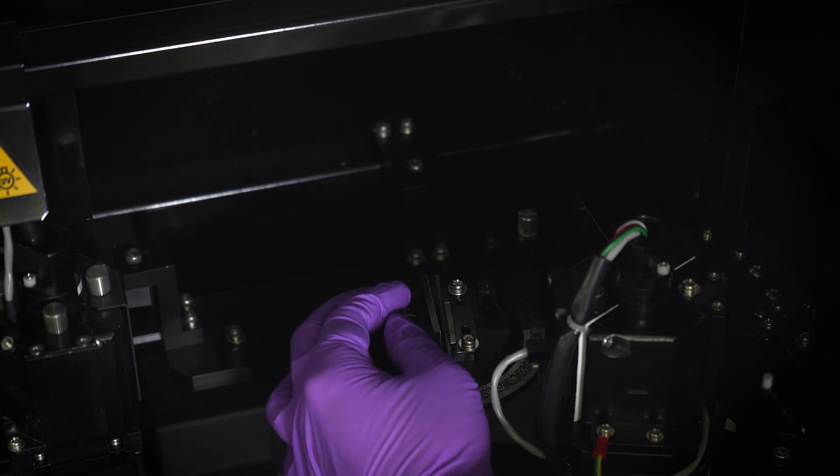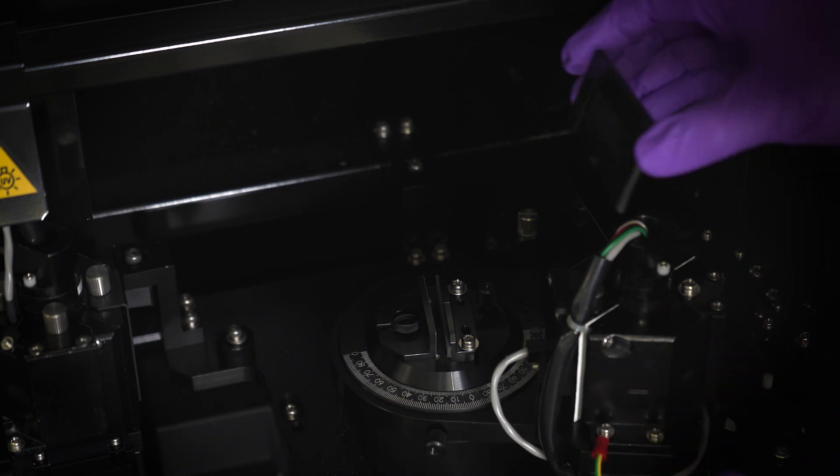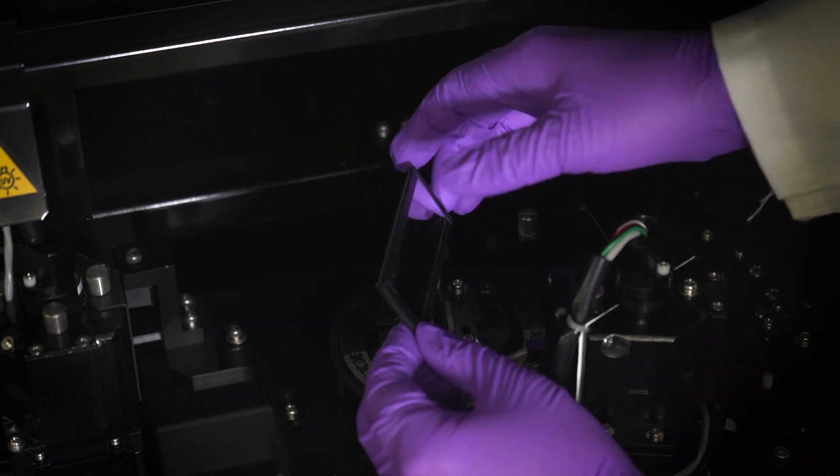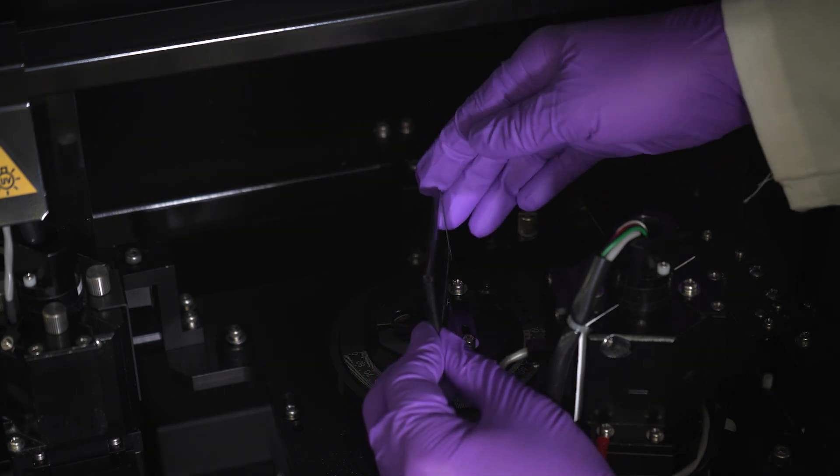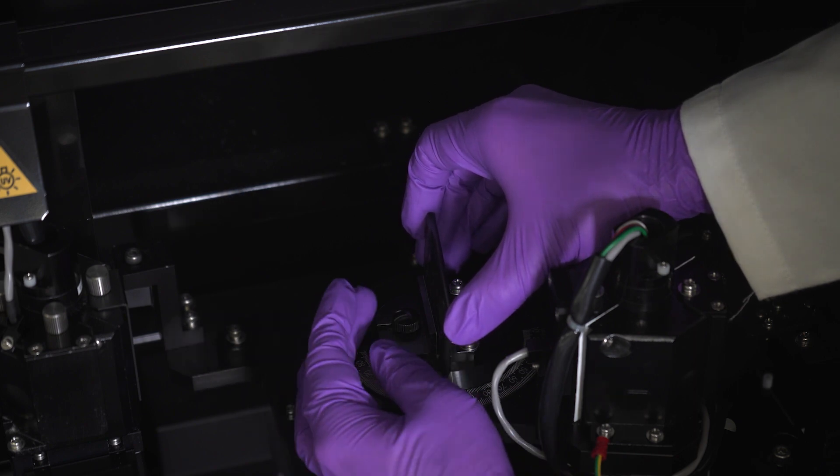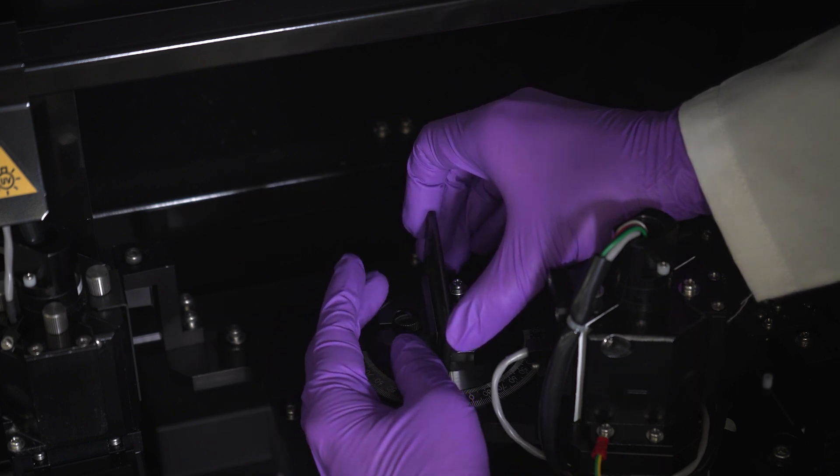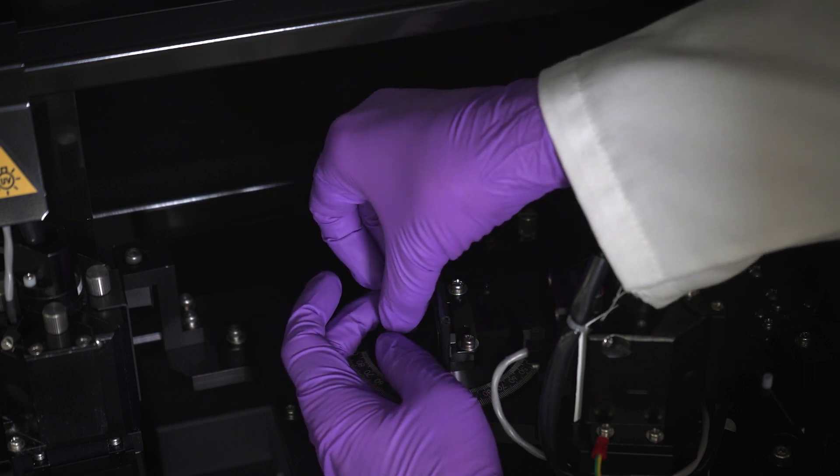Loosen the sample guard set screw. Place the sample between the sample support and the sample guard. The reflecting surface of the sample should face the sample support. Lightly press the sample guard against the rear side of the sample to fix the sample in place. Tighten the sample guard set screw.